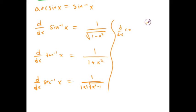Inverse cosine of x is just the negative of what it is for inverse sine x. So negative 1 over square root of 1 minus x squared, negative 1 over 1 plus x squared. And the derivative of inverse cosecant is negative 1 over absolute value of x times x squared minus 1.